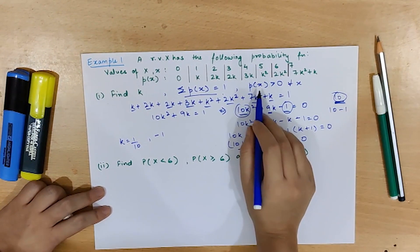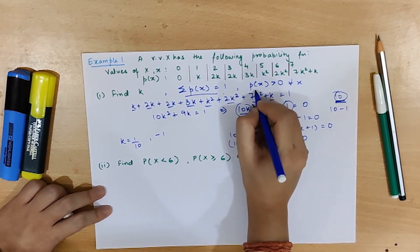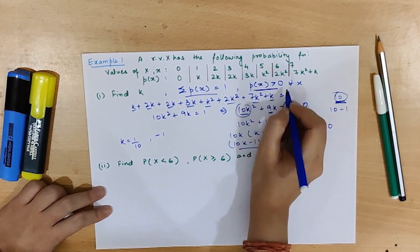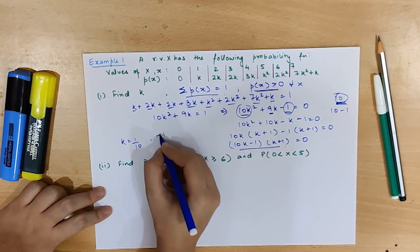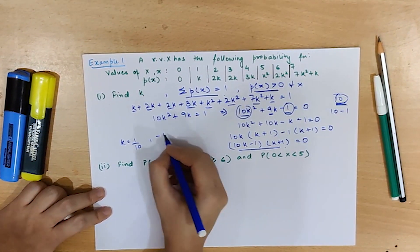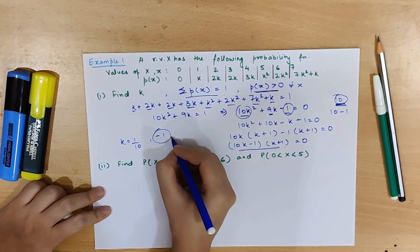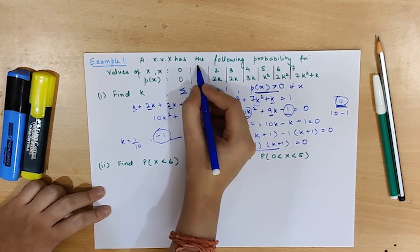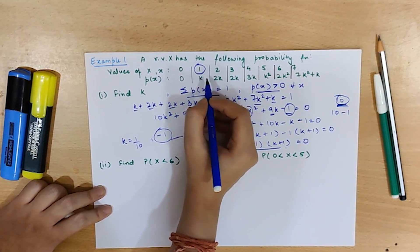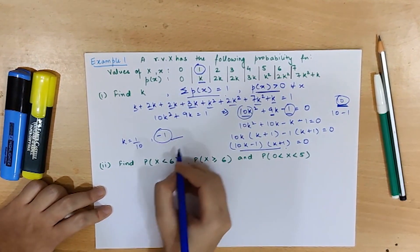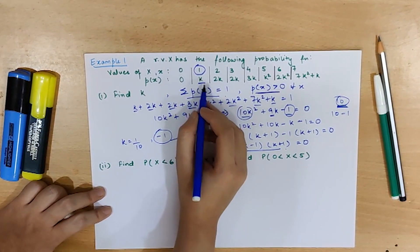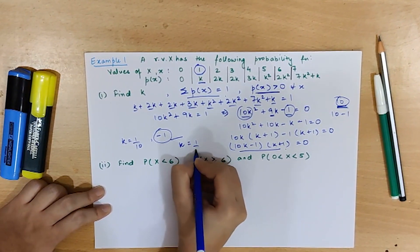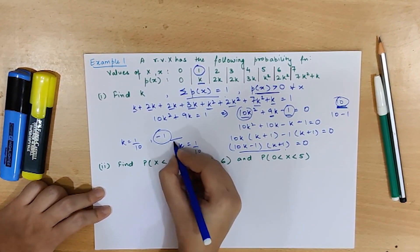According to the second property of the probability function, every probability should be greater than 0. This rules out k = −1, since the probability when x = 1 is equal to k, and hence it cannot be negative. So the answer is k = 1/10.